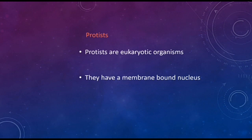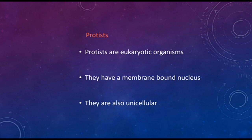Eukaryotic organisms have a membrane-bound nucleus, while prokaryotic organisms like monera do not have a membrane-bound nucleus. Protists are also unicellular, but some protists are multicellular as well. Multicellular means more than one cell. The main difference between protists and monera is that monera have no membrane-bound nucleus while protists do. Otherwise both are unicellular.